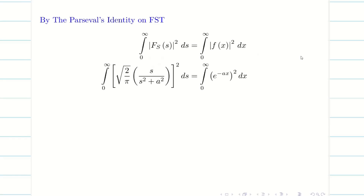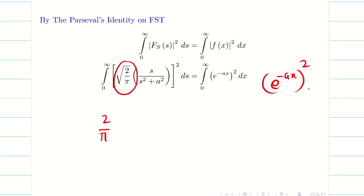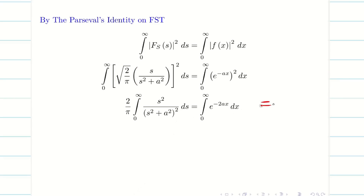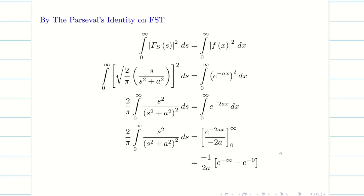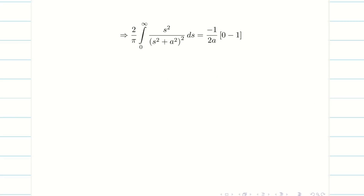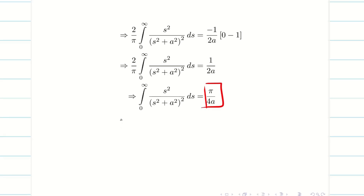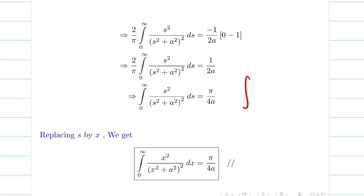Squaring Fs(s) gives (2/π)·s²/(s²+a²)². On the right-hand side, e^(−ax) squared is e^(−2ax). Integrating: e^(−2ax)/(−2a) from 0 to ∞ gives 1/(2a). Pushing 2/π to the other side gives π/4a. Replacing s by x: ∫₀^∞ x²/(x²+a²)² dx = π/(4a).